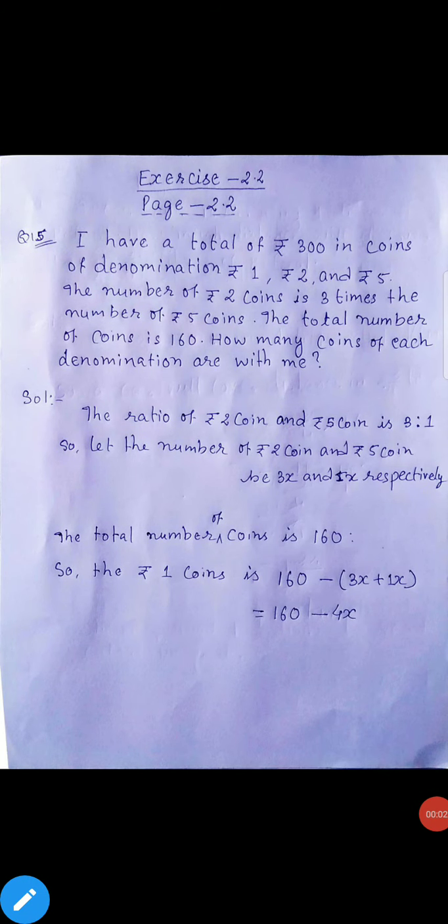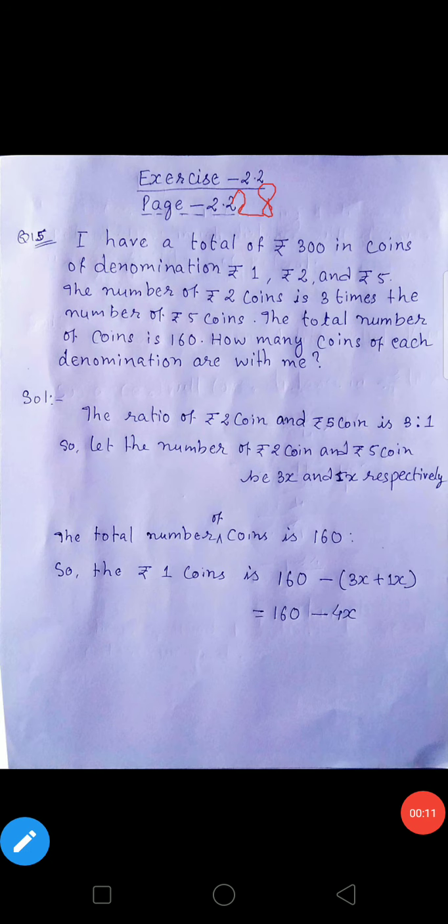Let us start our chapter exercise 2.2, page 22. I have a total of 300 rupees in coins of denomination rupees 1, rupees 2, and rupees 5. The number of rupees 2 coins is 3 times the number of 5 rupee coins. The total number of coins is 160. How many coins of each denomination are with me?